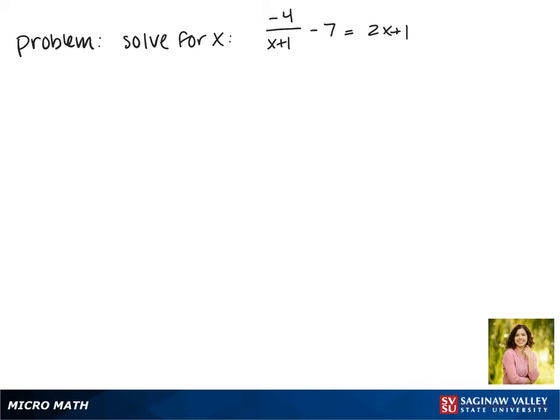Today we'll be solving for x in the equation negative 4 over x plus 1 minus 7 equals 2x plus 1.